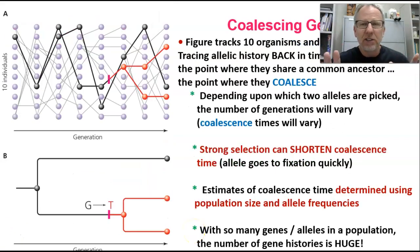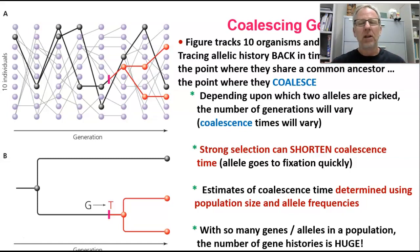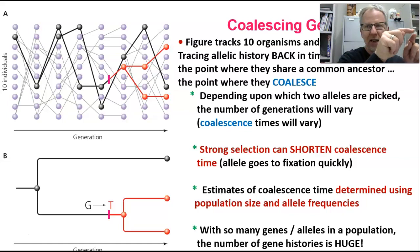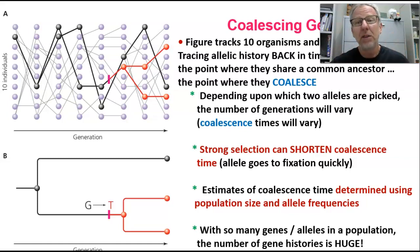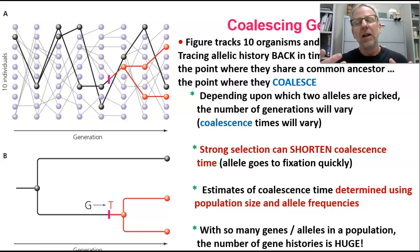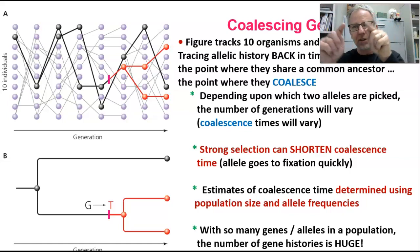This slide focuses on the concept of coalescence and what it means when two alleles coalesce. Fundamentally, two alleles coalesce at the point that those two alleles came from a common ancestral allele. We can trace alleles back in history and find the point at which two alleles came from a common ancestral allele.